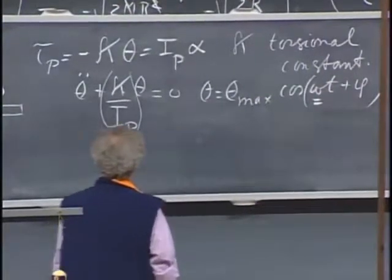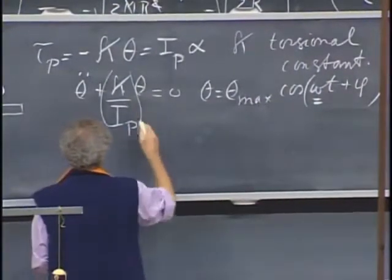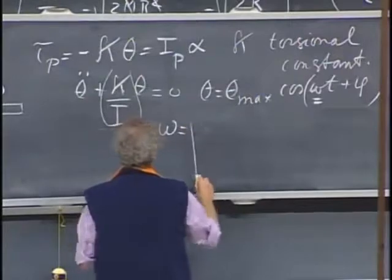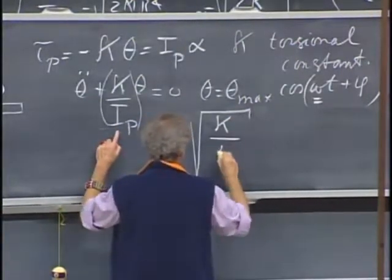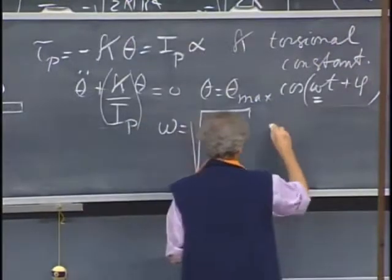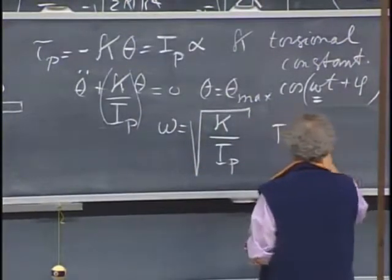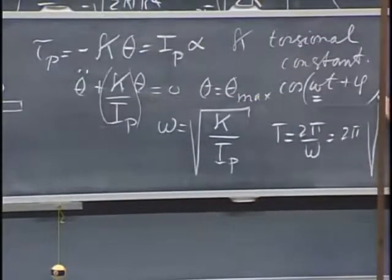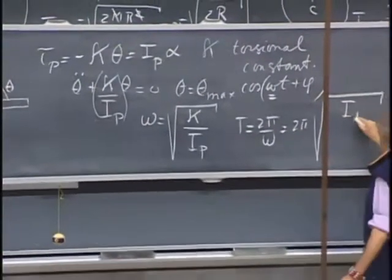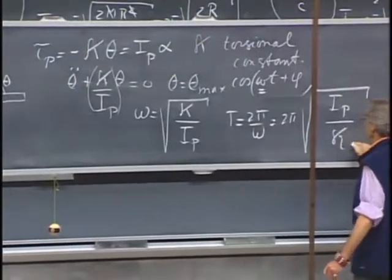This is the angular frequency. And angular frequency is the square root of kappa divided by the moment of inertia about point P, and therefore the period, which is two pi divided by omega, equals two pi times the square root moment of inertia about point P divided by kappa.